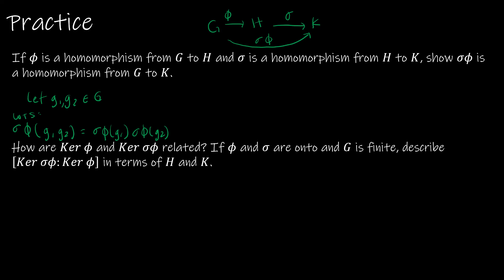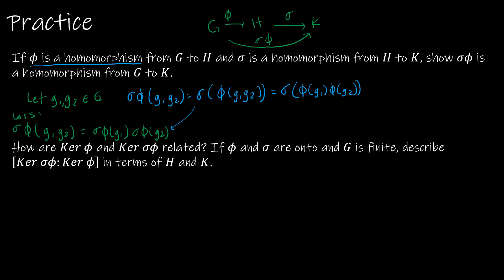Starting with (σ∘φ)(g₁g₂), by composition of functions this equals σ(φ(g₁g₂)). Since phi is a homomorphism, we can rewrite φ(g₁g₂) as φ(g₁)·φ(g₂). Then since sigma is a homomorphism, we rewrite σ(φ(g₁)·φ(g₂)) as σ(φ(g₁))·σ(φ(g₂)), which equals (σ∘φ)(g₁)·(σ∘φ)(g₂). That's exactly what we wanted to show — therefore σ∘φ is a homomorphism.